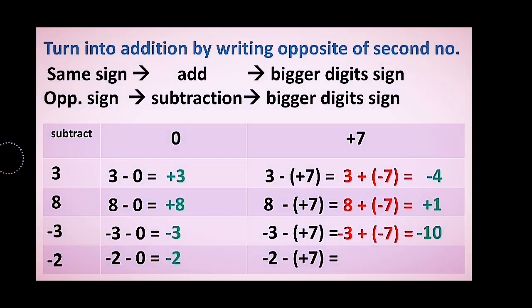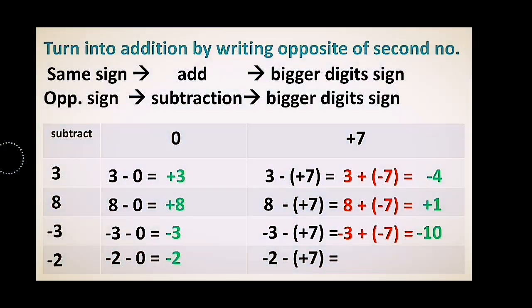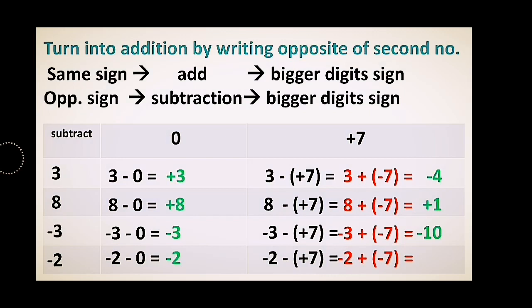Let me clearly state one key rule: subtracting integers is nothing but adding the opposite of the second number. To subtract integers, add the opposite of the number that comes after the subtraction sign. The final answer in the last example is negative 9.